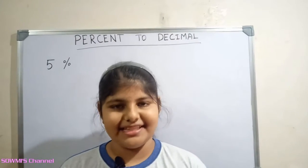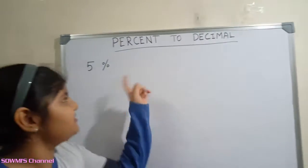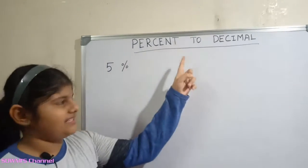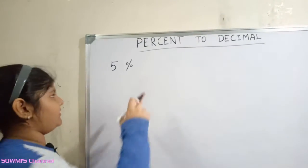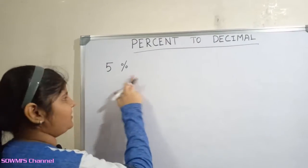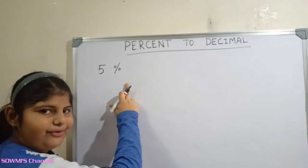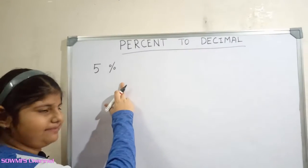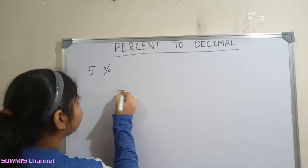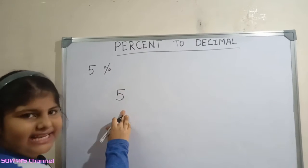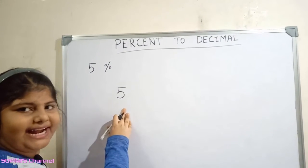Hi friends, in this video we are going to see how to convert percentage into decimal number. For example, five percentage. First we have to remove the percentage symbol. Next we have to divide the value by hundred.